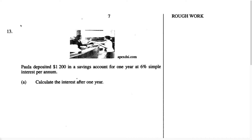In this video, we're going to do a simple interest word problem. The question reads: Paula deposited $1,200 in a savings account for one year at 6% simple interest per annum.